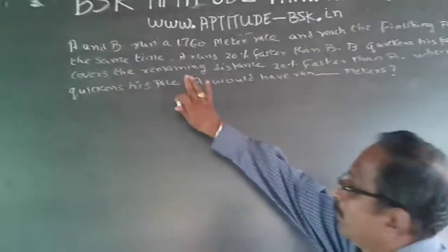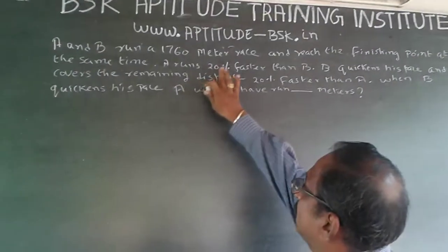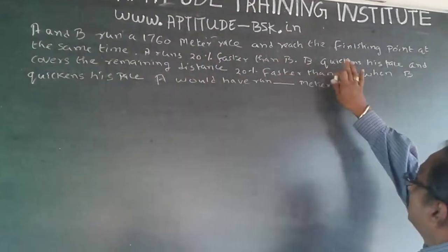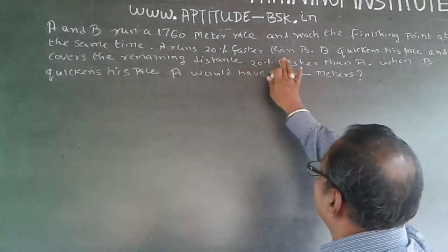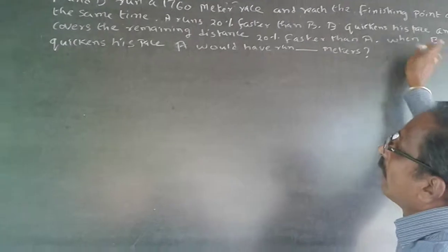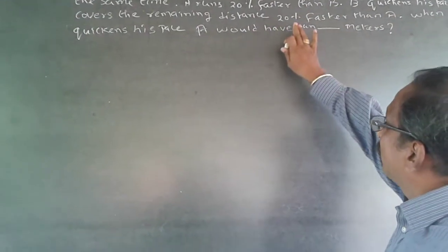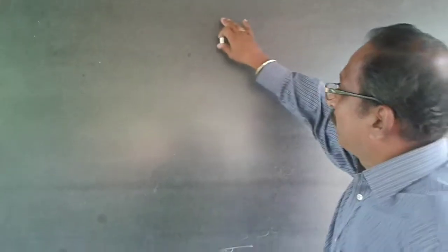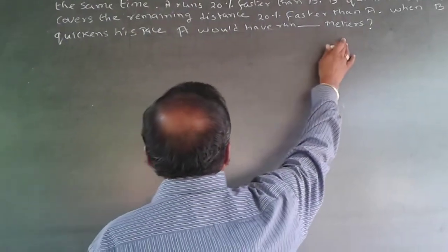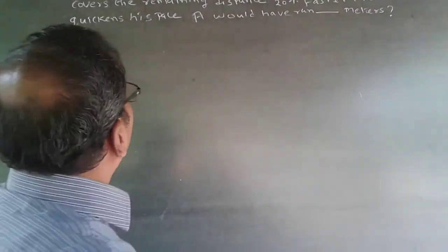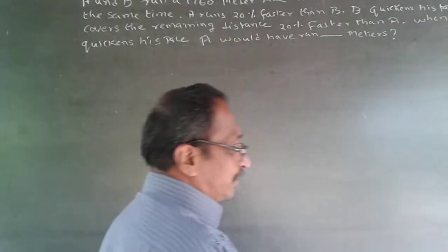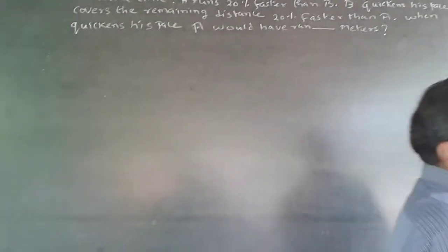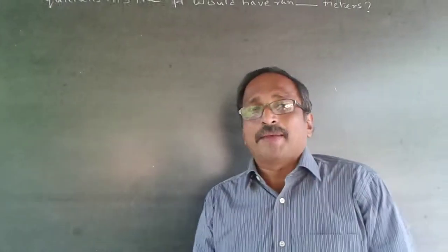The question is: A and B run a 1760 meter race and reach the finishing point at the same time. A runs 20% faster than B. B quickens his pace and covers the remaining distance 20% faster than A. When B quickens his pace, A would have run how many meters? This is a question more into speed, time, and distance.